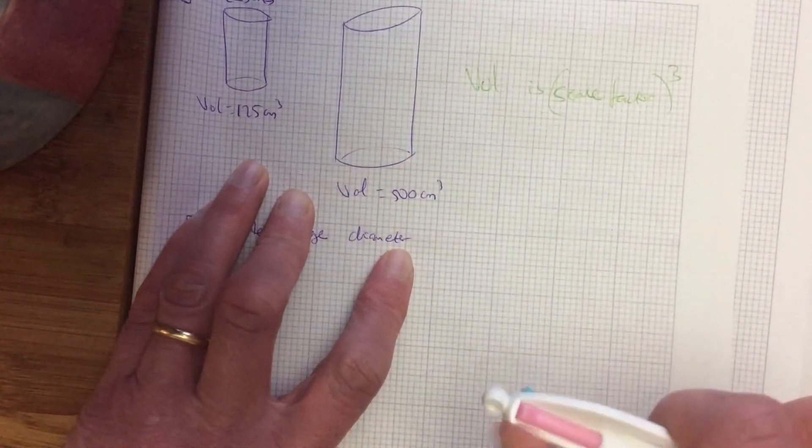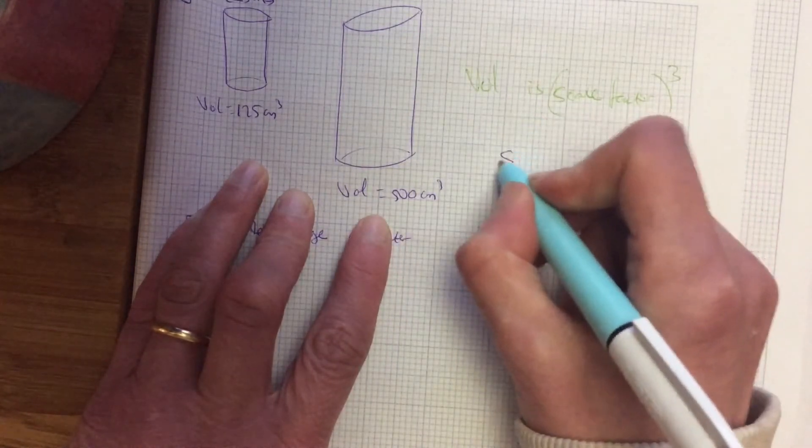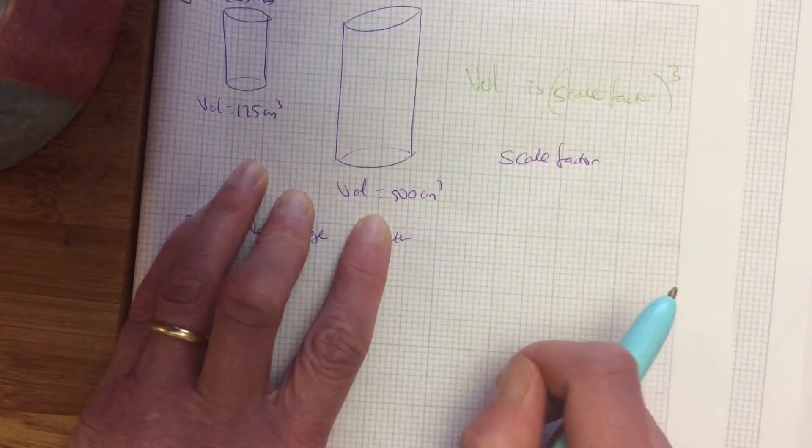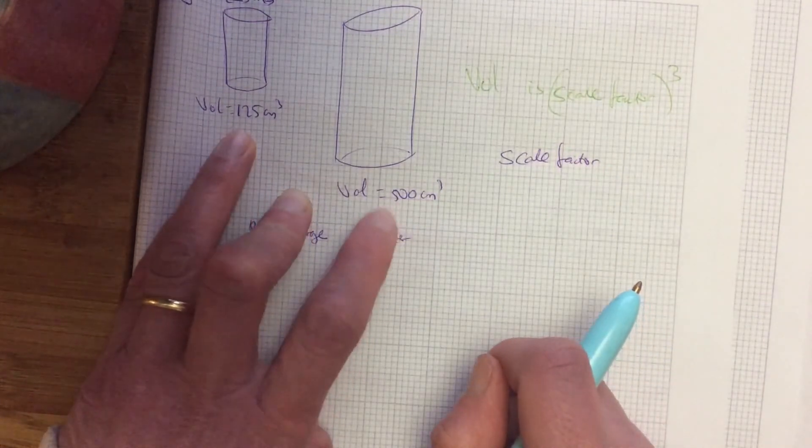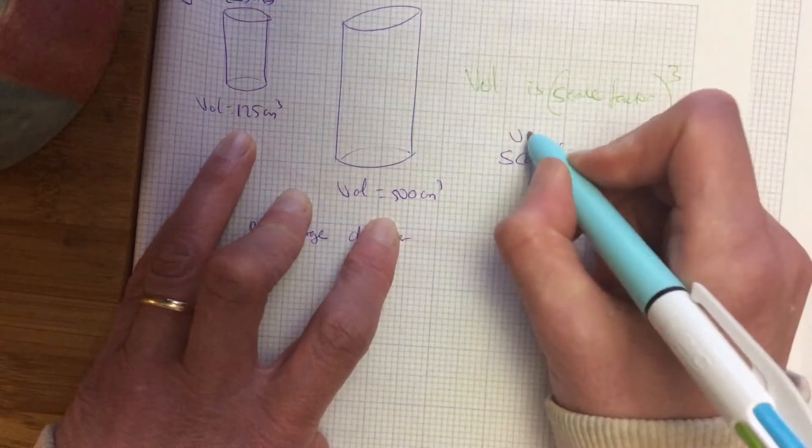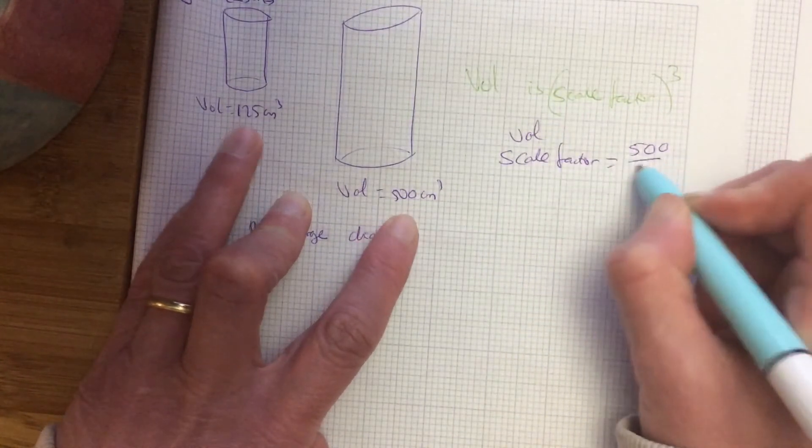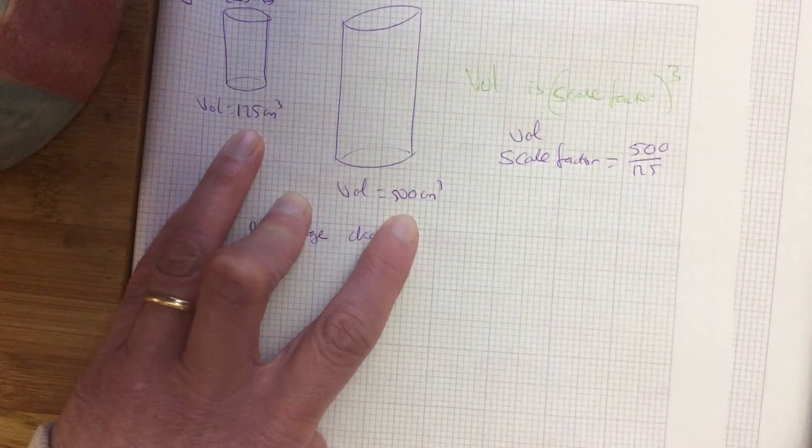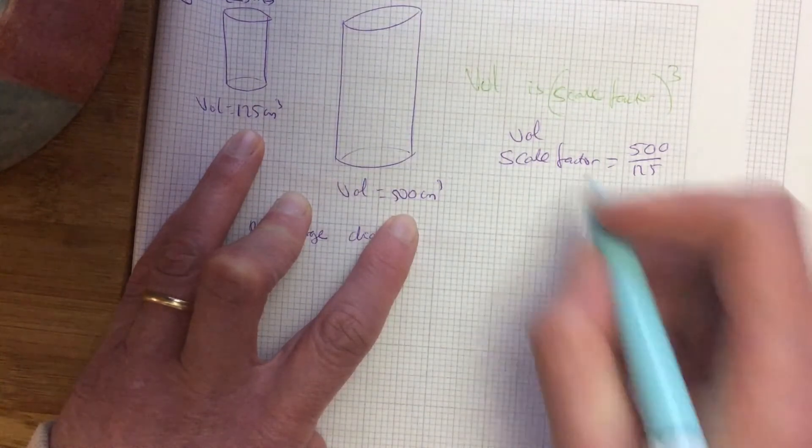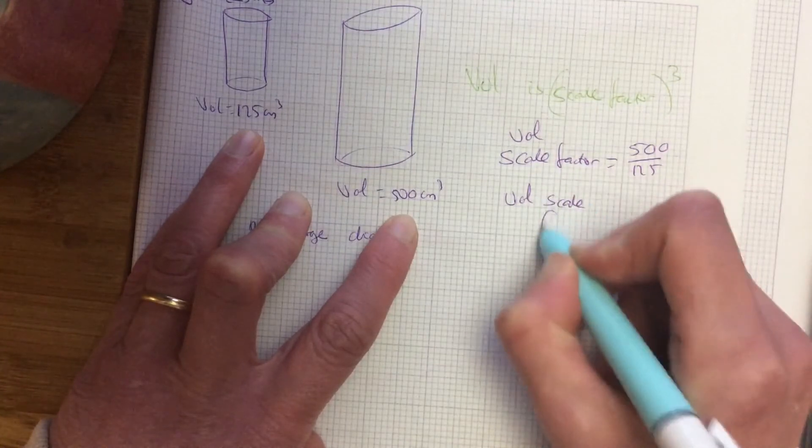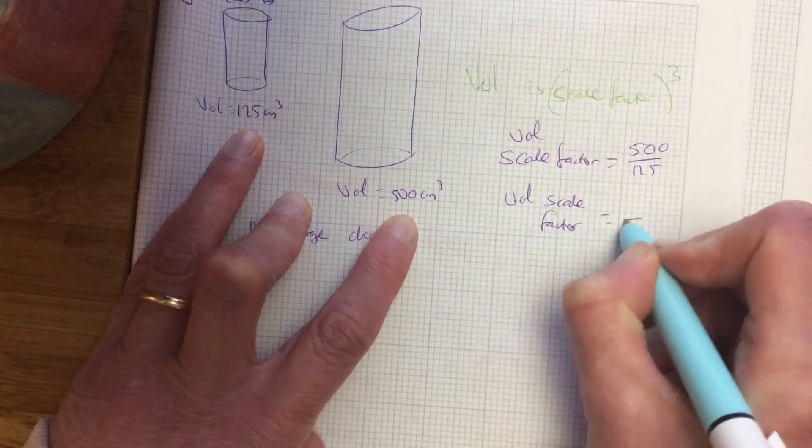So let's look here. Now how do you work out your scale factor? Do you remember how to do that? Scale factor is new side over old side. Only I don't have the sides, I've only got the volumes. So I can work out the volume scale factor. So it's the new volume over the old volume. So the volume scale factor is 4.